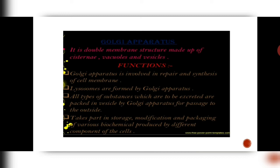Next we have the Golgi apparatus. Everything that is synthesized by both SER and RER is passed on to the Golgi apparatus, which is a double membranous structure. It again has cisternae, vesicles and vacuoles. Golgi apparatus is involved in repair and synthesis of the plasma membrane. Whenever there is an injury of the plasma membrane, Golgi apparatus is going to repair it. Lysosomes, which are vesicles containing enzymes, are formed by the Golgi apparatus. All types of substances which are to be excreted are packed, modified and stored by the Golgi apparatus. So its function is storage, modification and packaging of various biomolecules like fats produced by SER and proteins produced by the RER.